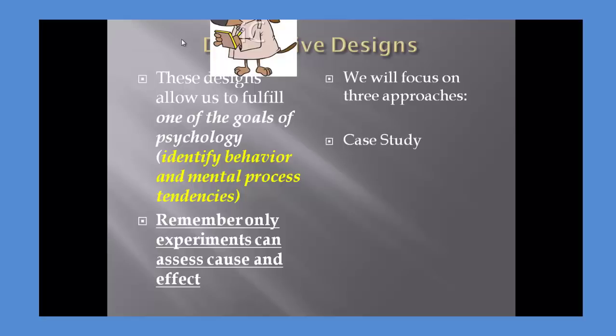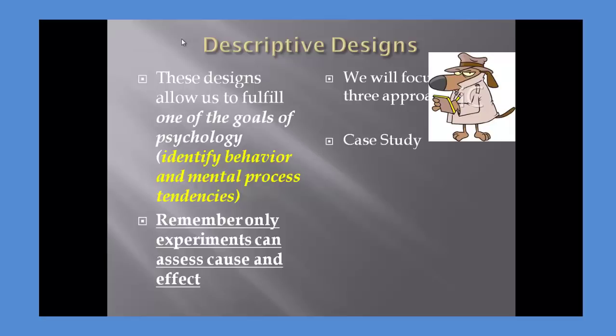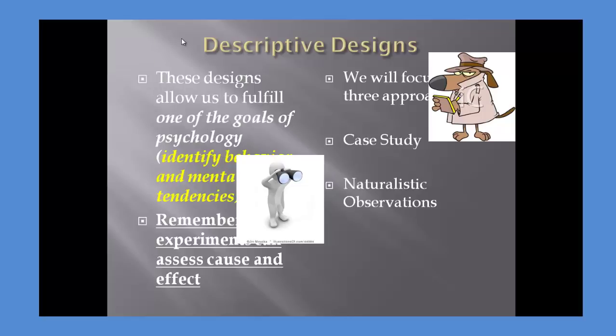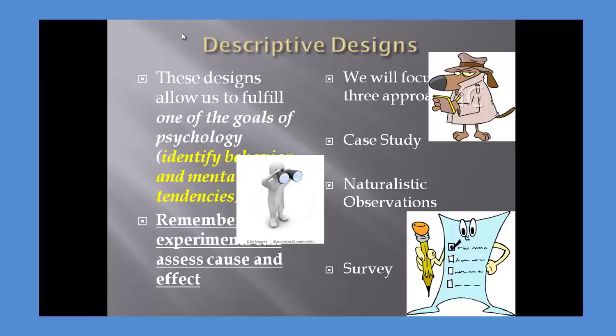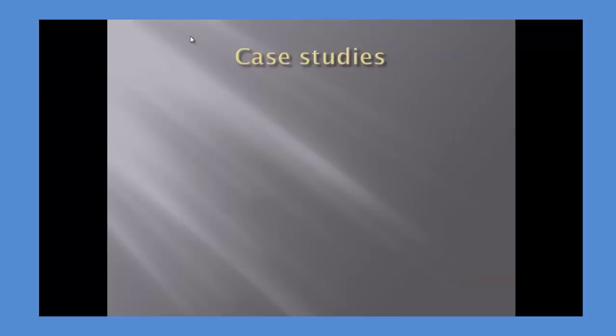We're going to focus on three major approaches. The first is a case study, the second is naturalistic observation, and the third is the use of surveys. You've probably used all of these before to make conclusions about people already. We're going to talk about how it's done a little more precisely.